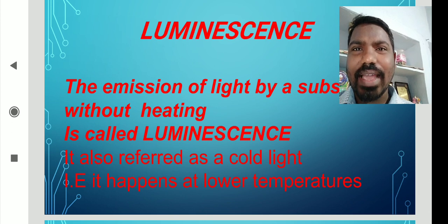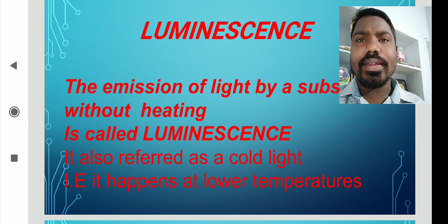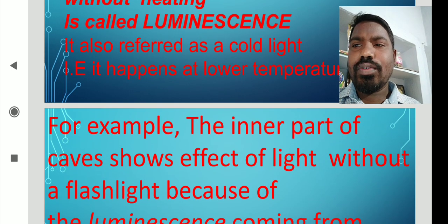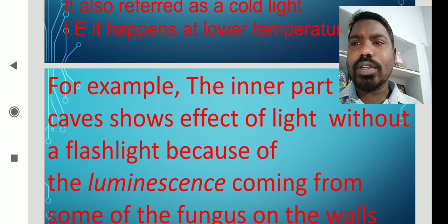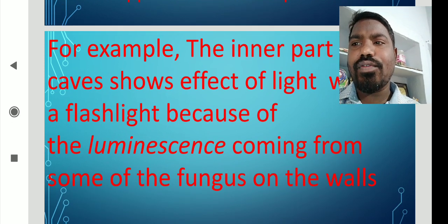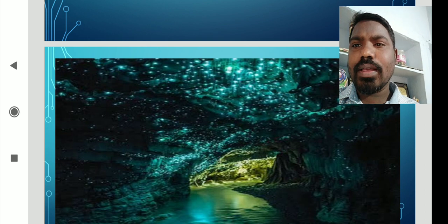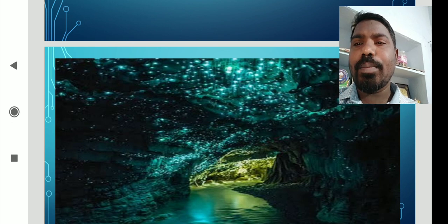This light is called luminescence and it is quite different from incandescent light. For example, the inner portion of caves shows the effect of light without a flashlight, because of luminescence coming from some of the fungus on the walls. In such a cave, no light is produced from an external source — the light is produced inside the cave because of the fungus.